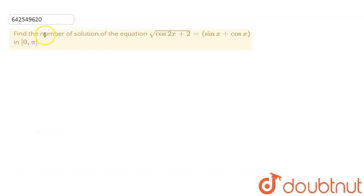Welcome to Doubtnet. We have this question. Find the number of solutions of the equation under root cos 2x plus 2 equals sin x plus cos x in 0 to 2 pi.